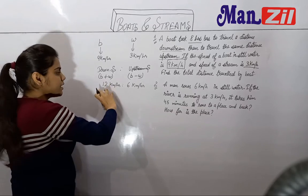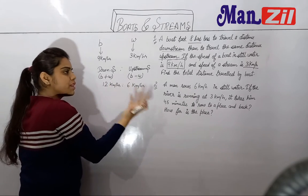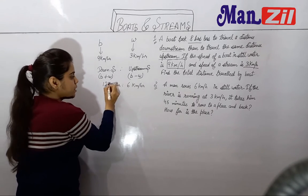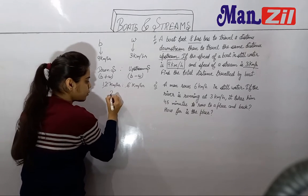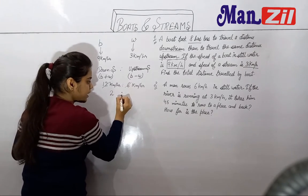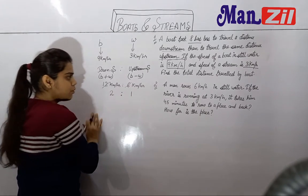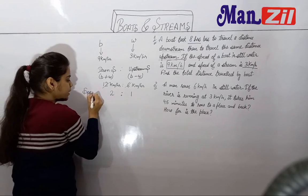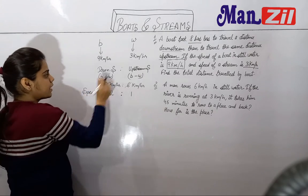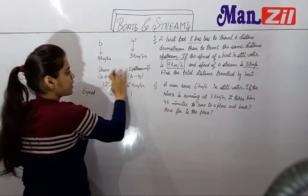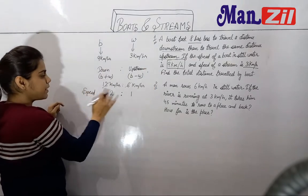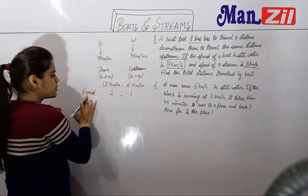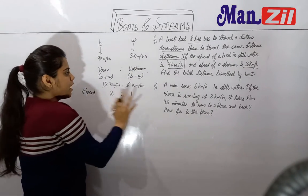Now I will find the ratio of 12 and 6. When I cut the ratio of 12 to 6, what will be the ratio? 2 ratio 1. This is our speed ratio — downstream speed is 2 units and upstream speed is 1 unit.